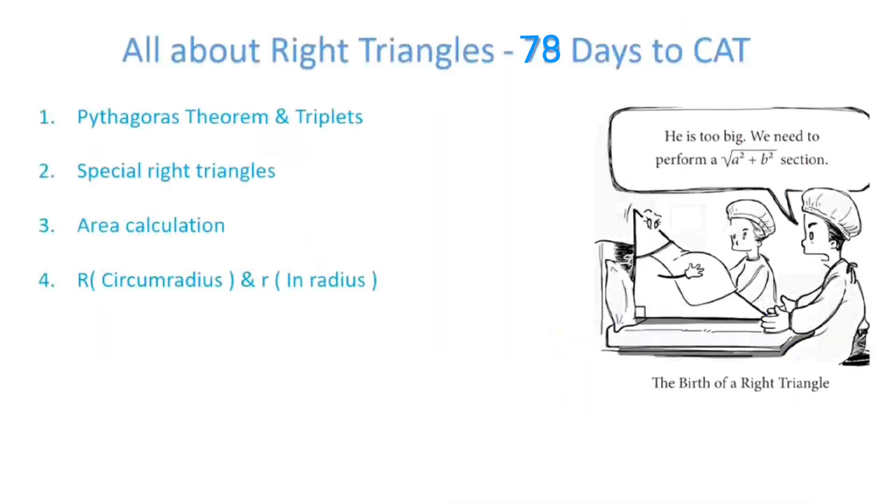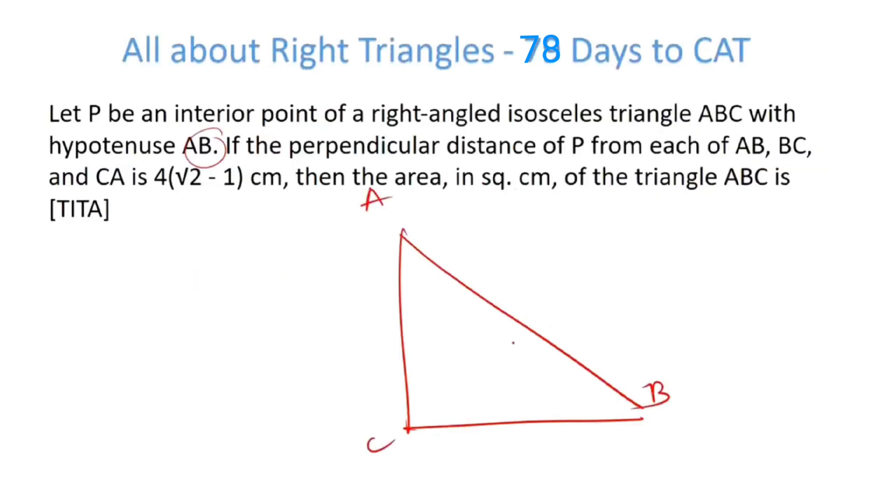Let P be an interior point of a right angle isosceles triangle ABC with hypotenuse AB. We have perpendicular distance of P from each of the sides is 4 root 2 minus 1, which happens in case of inradius. So inradius is 4 into root 2 minus 1. This is an isosceles right triangle.